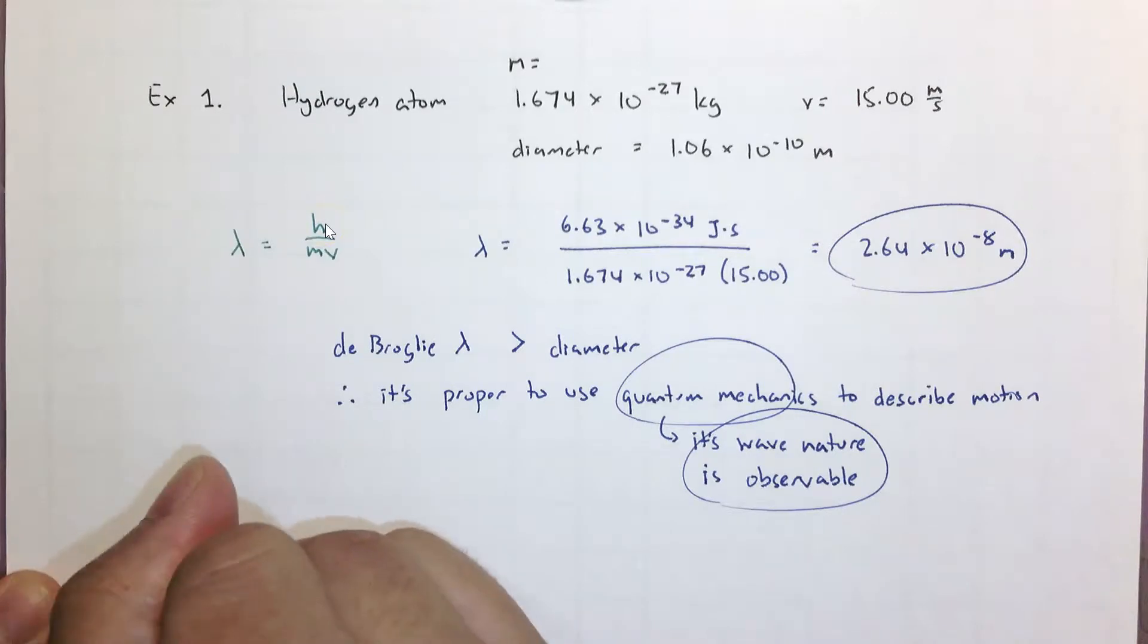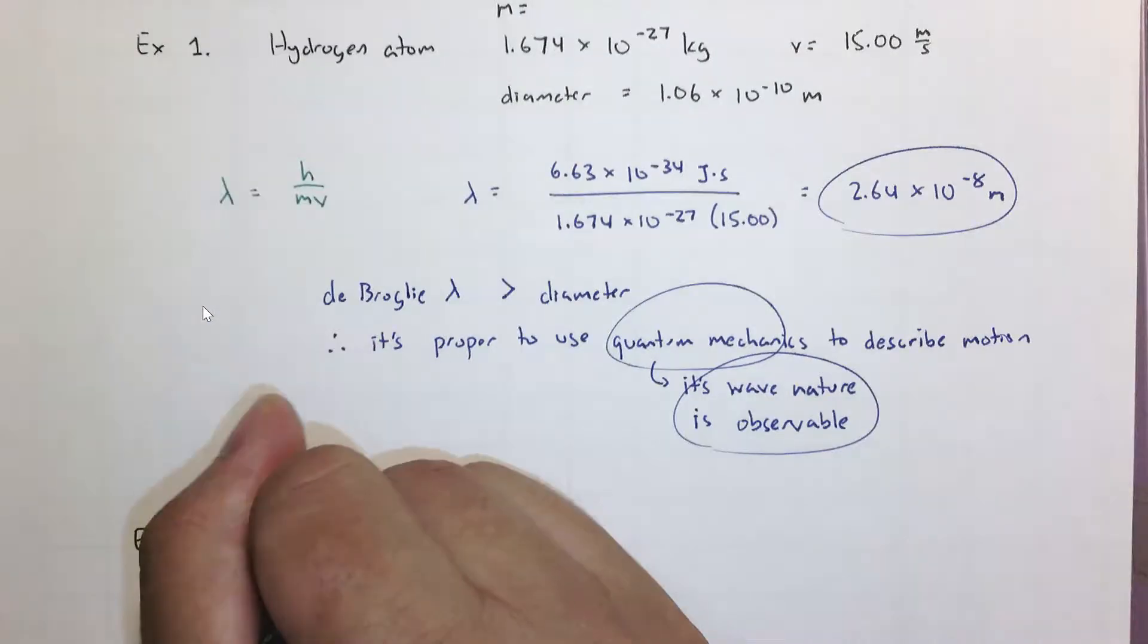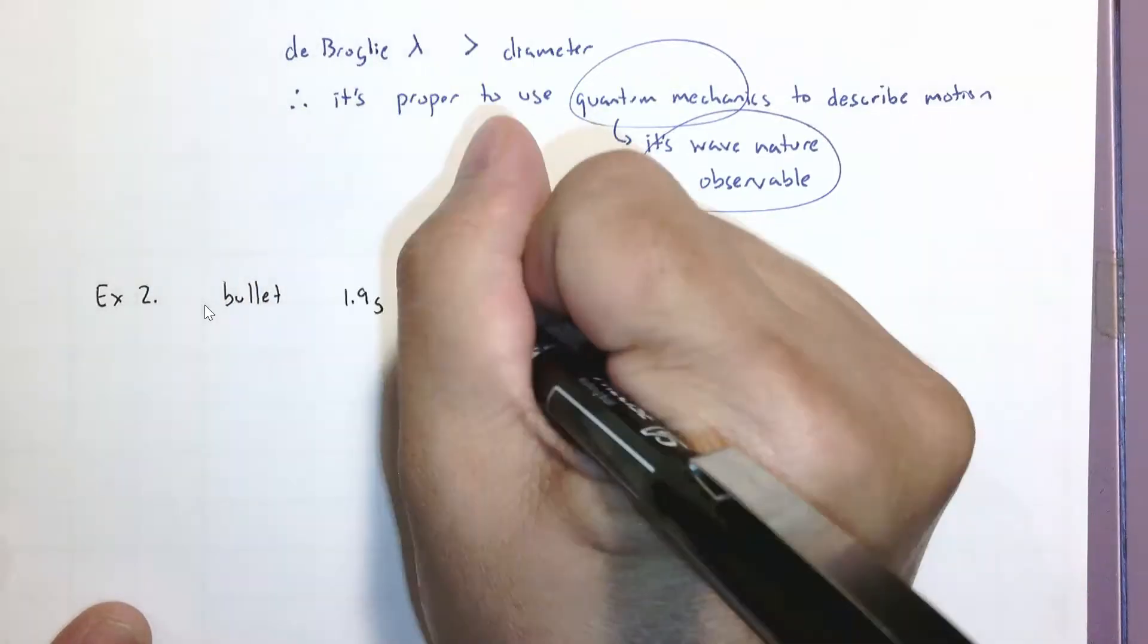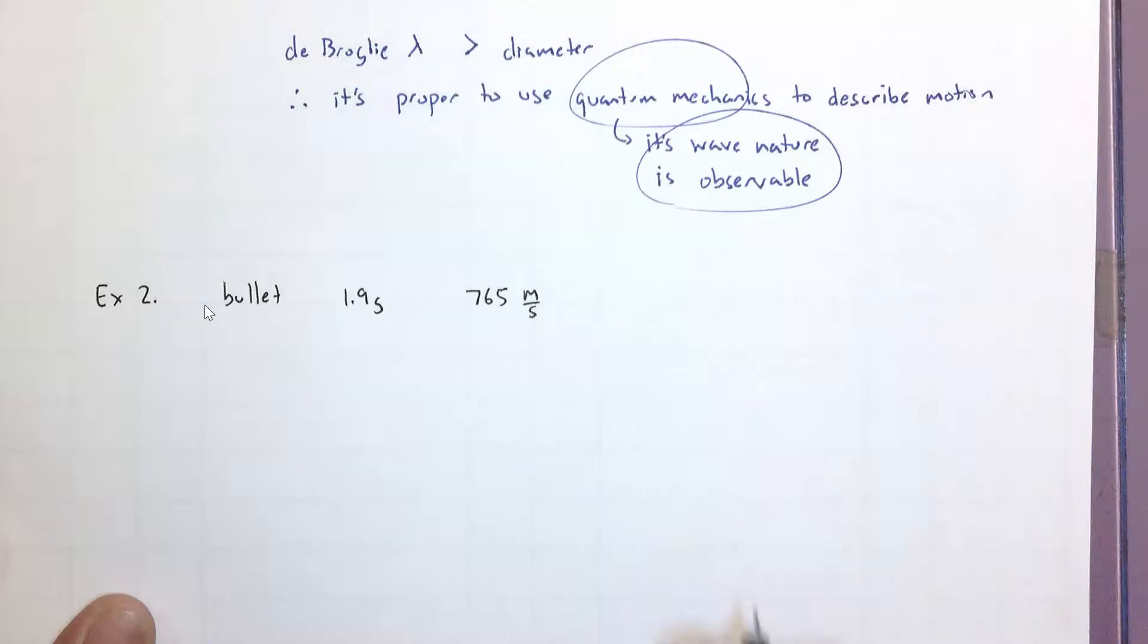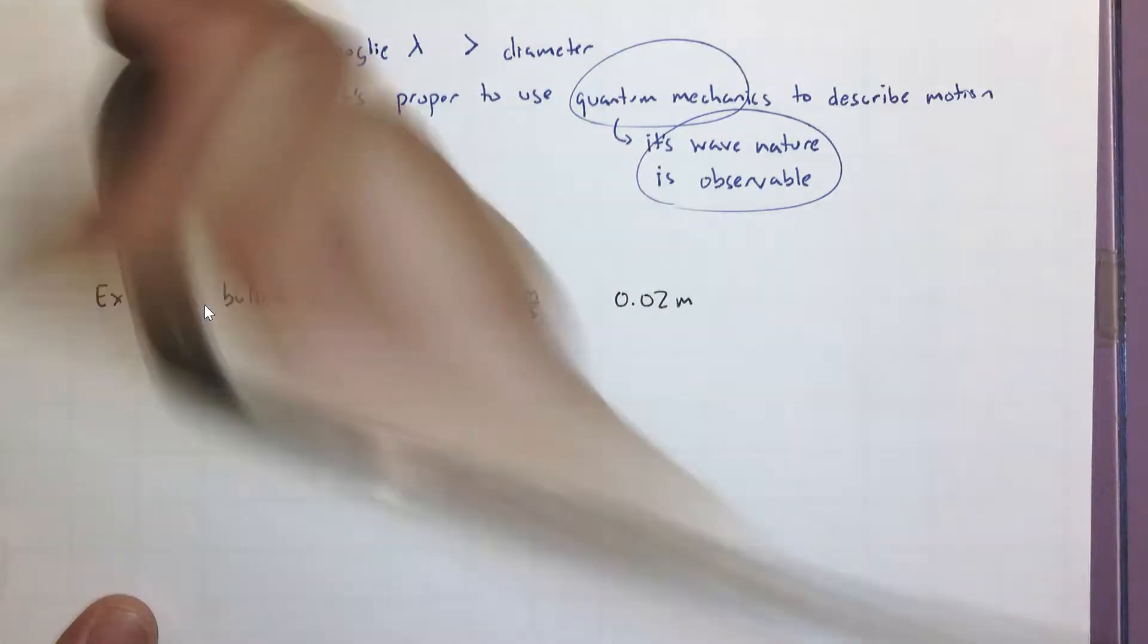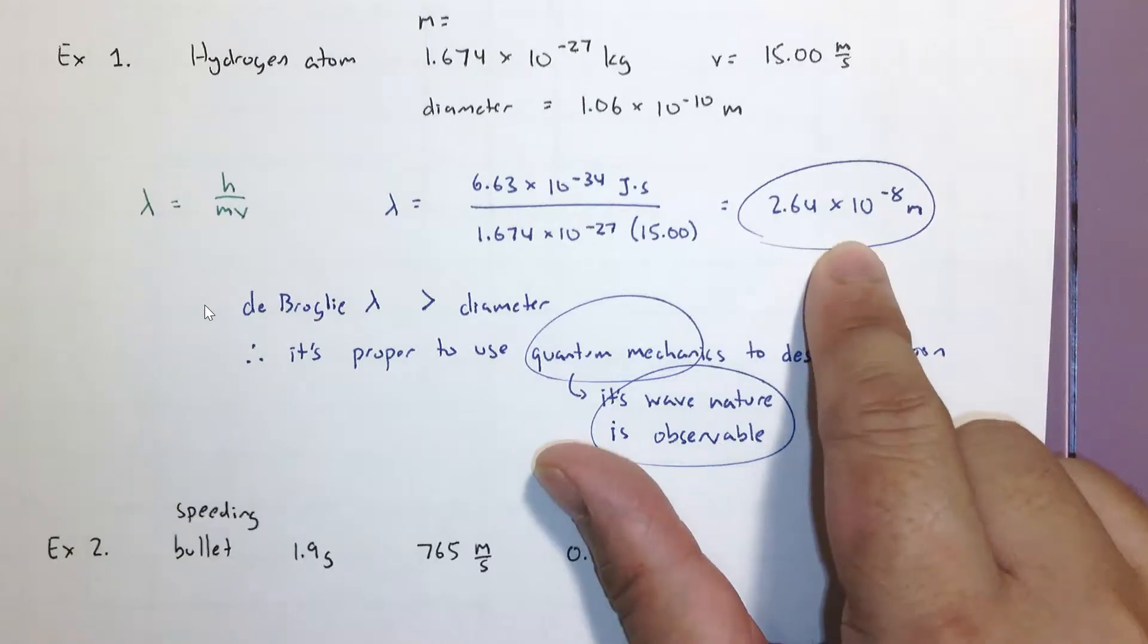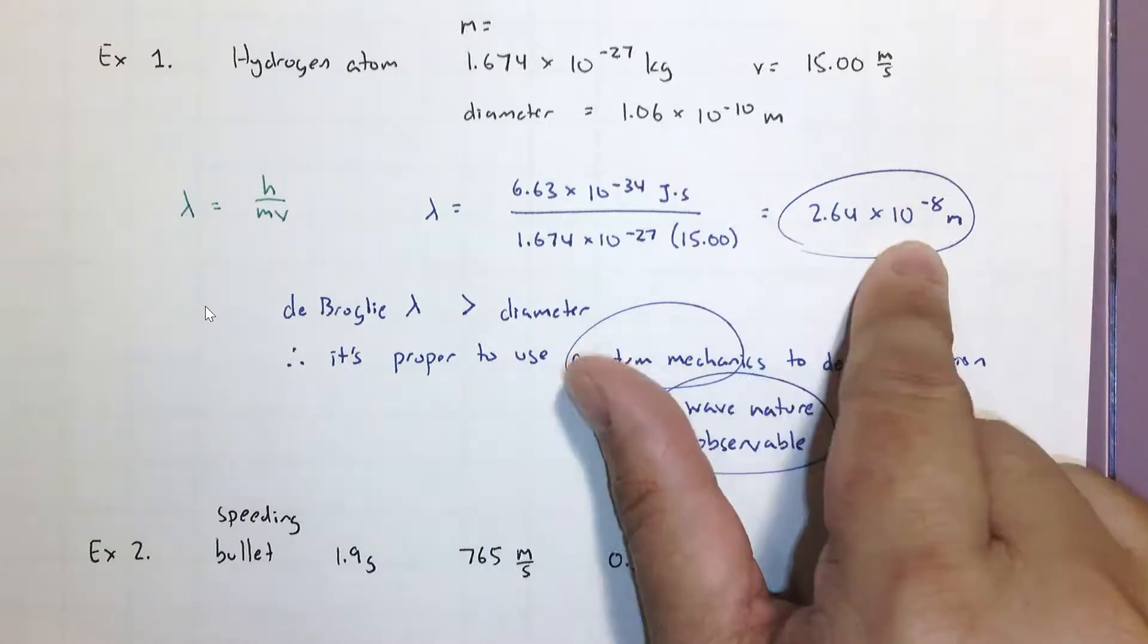Example two. We are going to use a bullet. 1.9 grams. What is that? 765 meters per second. And the length of a bullet, we'll use 0.02 meters. Okay. And again, this is a speeding bullet. Alrighty. Let me just double check. Okay, good. I freaked out a little bit. That number is larger than 10 to the minus 10 meters. Okay, speeding bullet time.